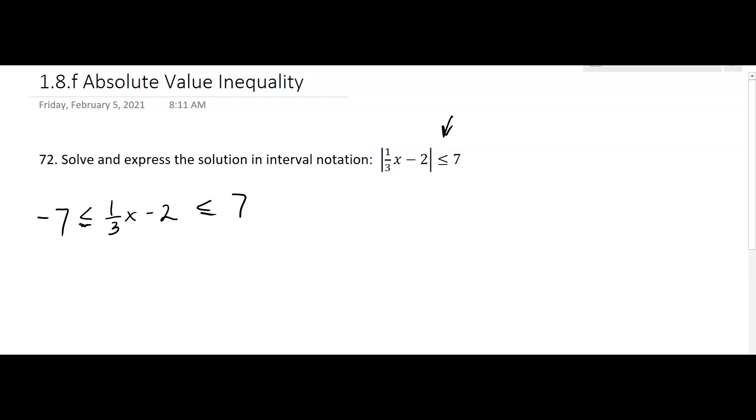Then we solve that by doing the same thing to all three parts. So we get negative 5 is less than or equal to 1/3x, which is less than or equal to 9.